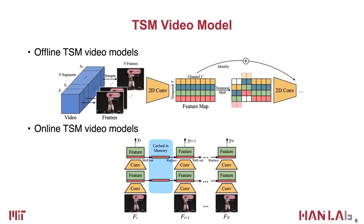This is how we use TSM to build a video understanding network for spatial-temporal modeling. For the offline version: given a video, we sample multiple frames, apply 2D convolution to each frame, then insert the TSM module to shift part of the channels along the temporal dimension. After the shift, each row has information from neighboring three frames, which can be fused by the following 2D convolution — all without extra computation compared to standard 2D CNN.